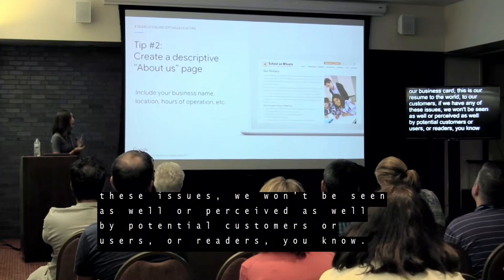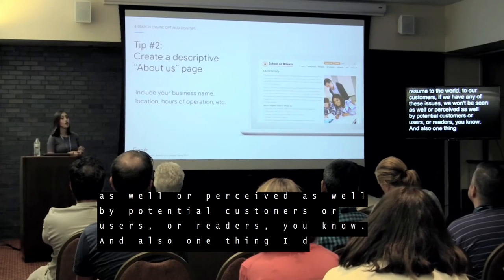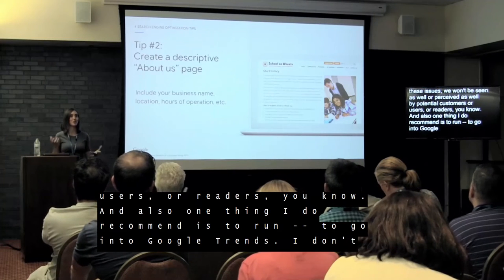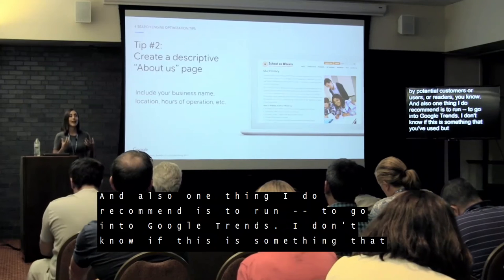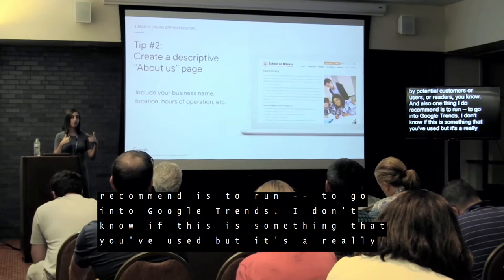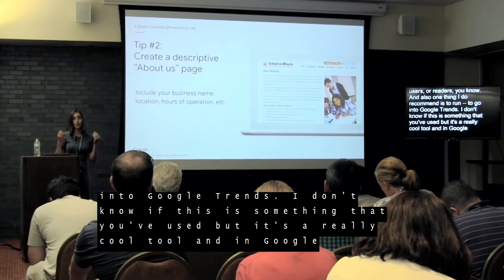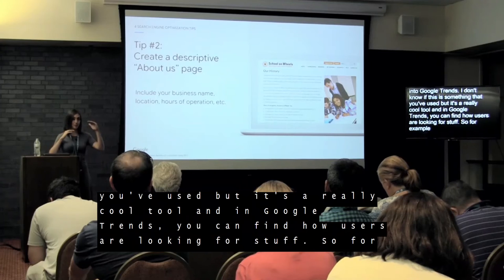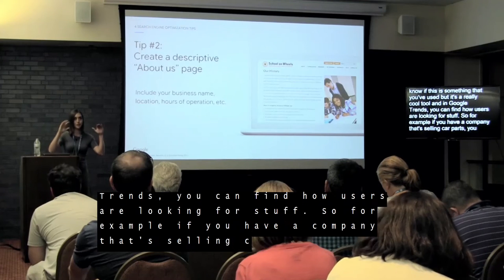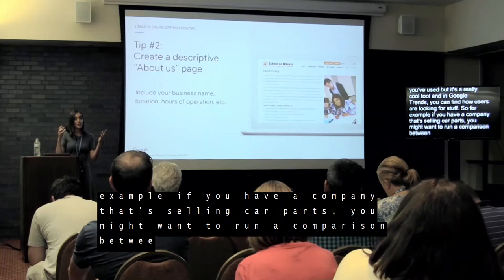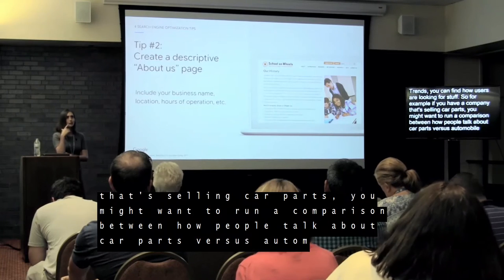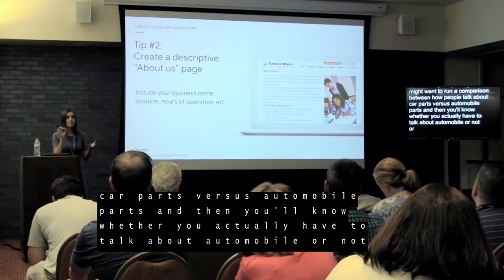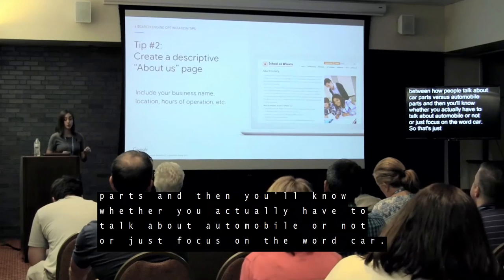I also recommend using Google Trends. In Google Trends, you can find how users are actually searching for things. For example, if you have a company selling car parts, you could run a comparison between 'car parts' versus 'automobile parts' and see which term people use more, then focus your content accordingly. It's a really useful tool.